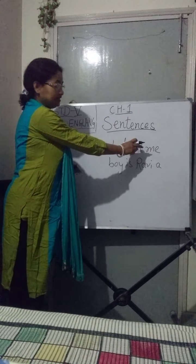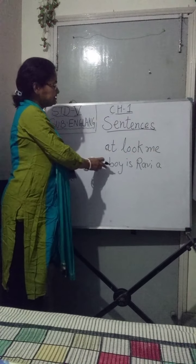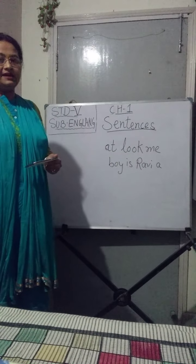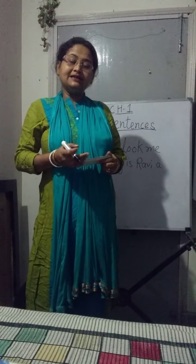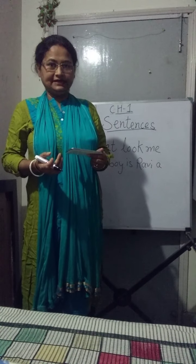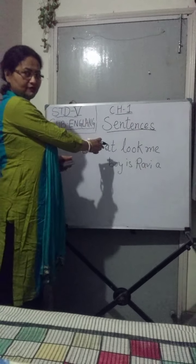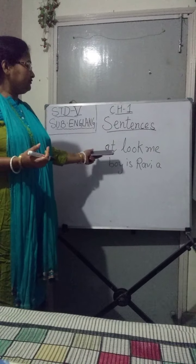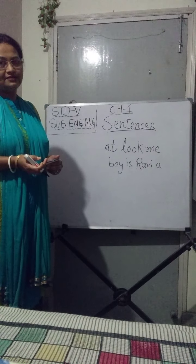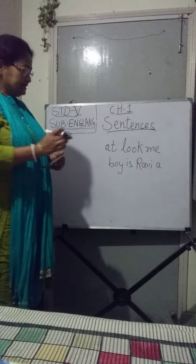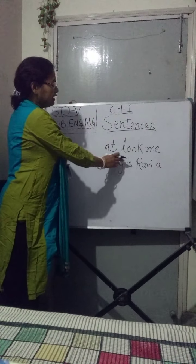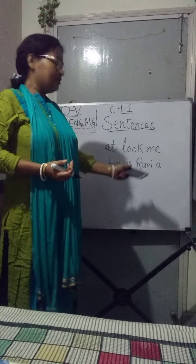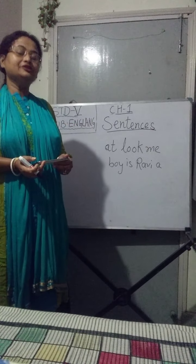See — at, look, me. And the next one is: boy, is, Ravi, a. Are you getting any sense out of this group of words? I hope no. Same way — boy, is, Ravi, a. Are you getting a sense out of these words? No, isn't it?